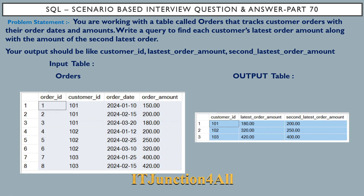The task is to write a query to find each customer's latest order amount along with the amount of the second latest order. For customer ID 101, the latest date is 20th March 2024 with an order amount of 180, and the second latest order date is 15th February 2024 with an order amount of 200.